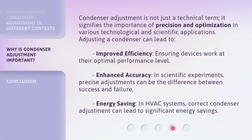Condenser adjustment is not just a technical term. It signifies the importance of precision and optimization in various technological and scientific applications. Adjusting a condenser can lead to improved efficiency, ensuring devices work at their optimal performance level; enhanced accuracy — in scientific experiments, precise adjustments can be the difference between success and failure; and energy saving — in HVAC systems, correct condenser adjustment can lead to significant energy savings.